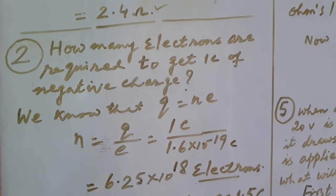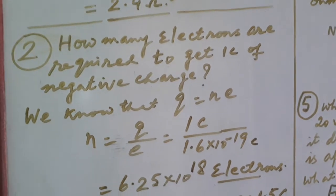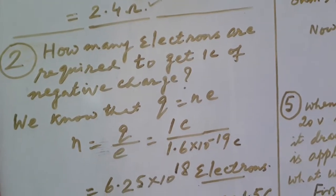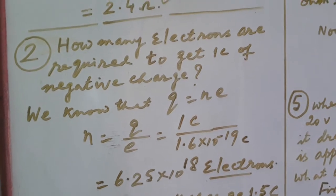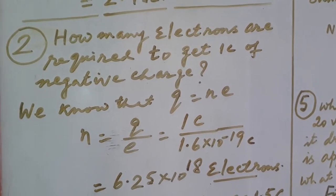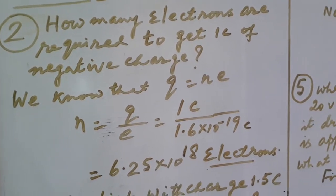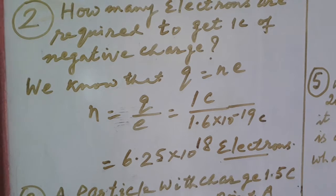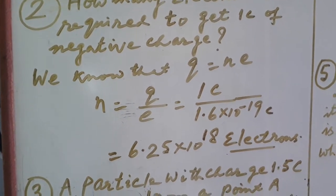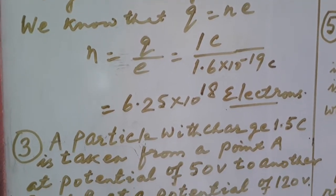Dear students, you know that charge of electron is 1.6 into 10 power minus 19 coulomb. In this case when we have to find the number of electrons required to get 1 coulomb of negative charge, we can use the formula Q equal to NE and N equal to Q by E. Putting the value of Q and E, you will get your answer.